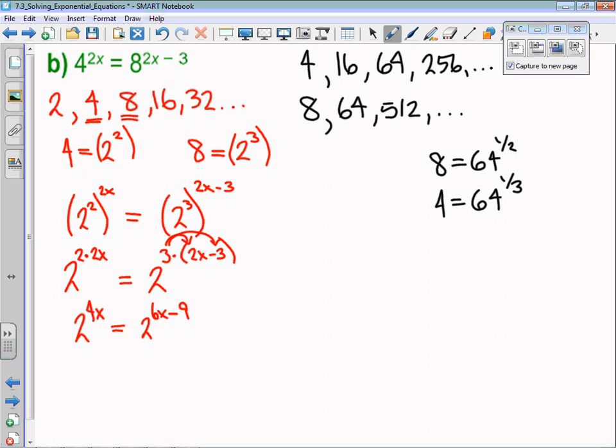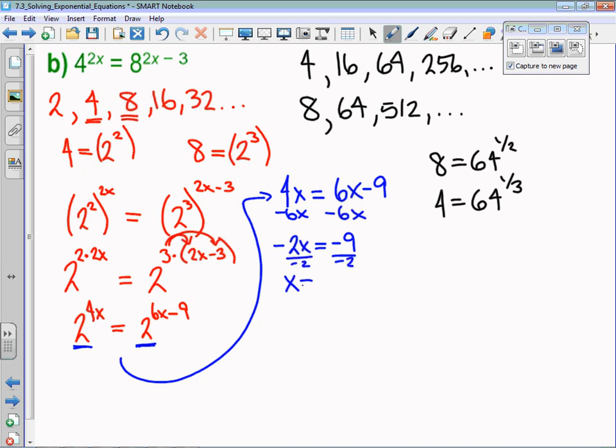What this turns our equation into is 2 to the power of 4x equals 2 to the power, that 3 will multiply into both terms, 6x minus 9. The major advantage is that we do have the common base at this point. Both my left-hand side and my right-hand side have base 2, which means I can drop the base. I get 4x equals 6x minus 9. I'm going to subtract 6x from both sides, getting negative 2x equals negative 9. When I divide by negative 2, I get that x equals 4.5.